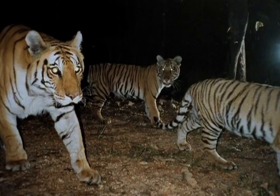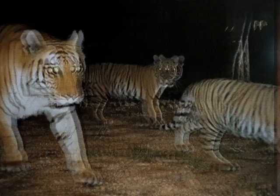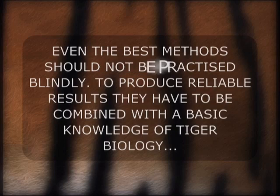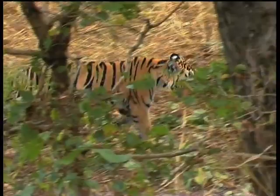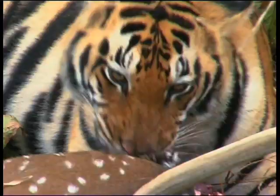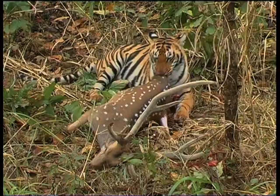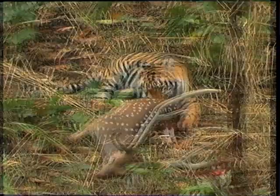Even the best methods should not be practiced blindly. To produce reliable results, they have to be combined with a basic knowledge of tiger biology, such as how much space do tigers need, what kind of habitat do they prefer, and what do they eat and how much. One important fact is that there is a direct correlation between the number of prey animals in a forest and the number of tigers the forest can support.